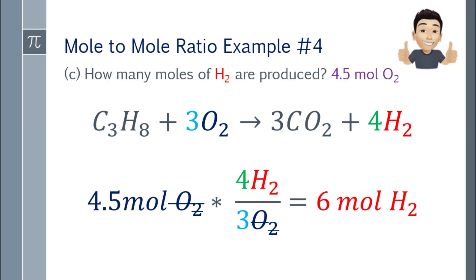Divide by 3O2, which is the coefficient of the given (oxygen). The O2 units cancel out. 4.5 times 4 equals 18, divided by 3 equals 6. So the answer is 6 moles of H2.